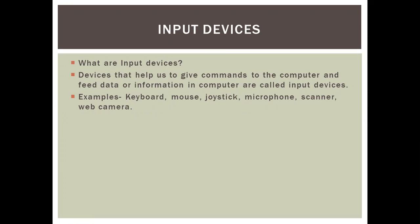So those devices are — you have a keyboard which becomes your input device, mouse, joystick which is used to play games, then the microphone, you have a scanner and a web camera. So all these, and there could be a few more also — these are all devices that help us to give commands to the computer and feed data or information into the computer.